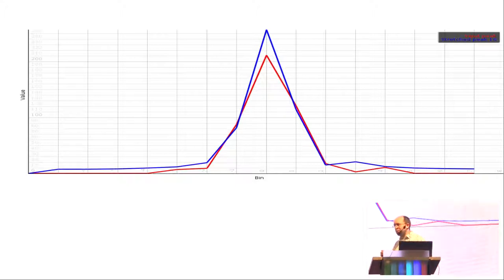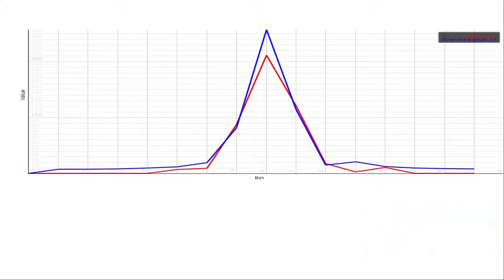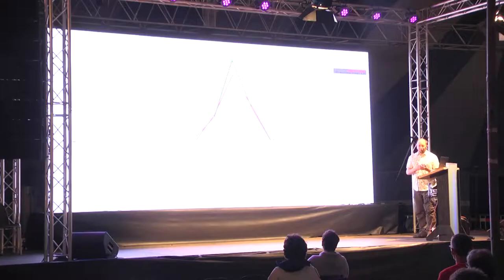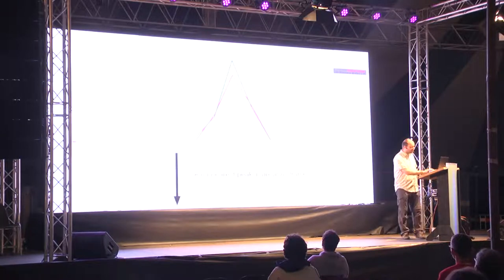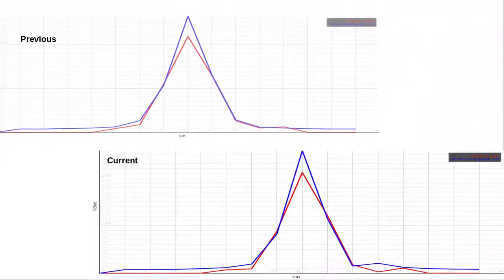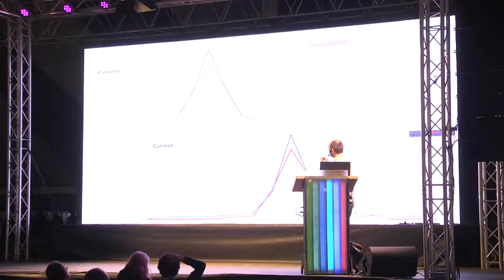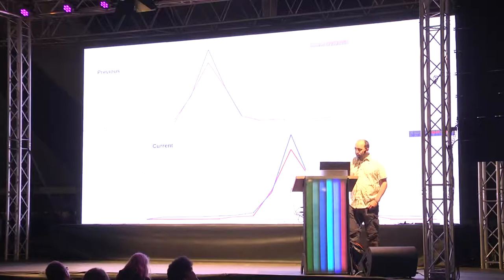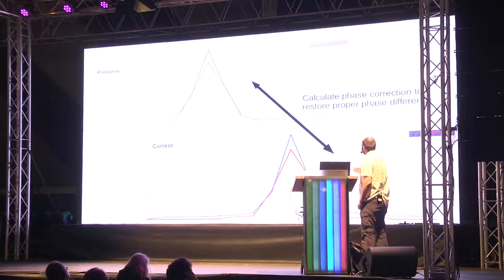With time-stretching, if you generate a new wave, you want to be sure it aligns properly with the previous wave synthesized. To do that, you need to go back to the previous frame, look up the nearest peak, and determine a phase-correction term. We find the nearest peak in the previous frame, then use the analyzed and synthesized peaks from both the previous and current frames to calculate the proper phase-correction term to ensure alignment.